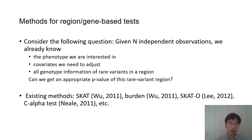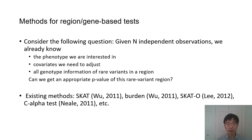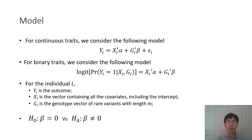Here, I will introduce methods for region-based or gene-based tests. Consider n independent observations with a phenotype, covariates to adjust, and genotype information of rare variants in a region. The question is whether we can get an appropriate p-value for this rare variant region. The existing methods include SKAT, Burden, SKAT-O, and C-alpha tests. In this lecture, we are particularly interested in SKAT, Burden, and SKAT-O.